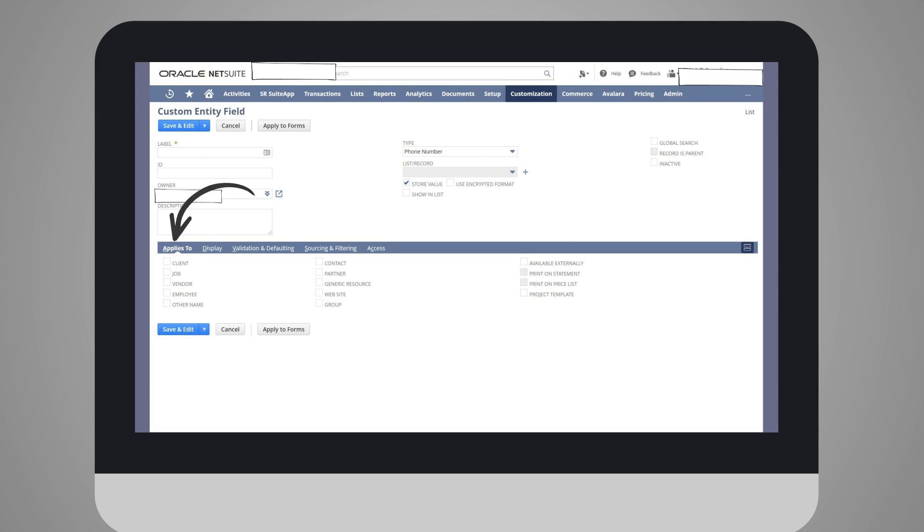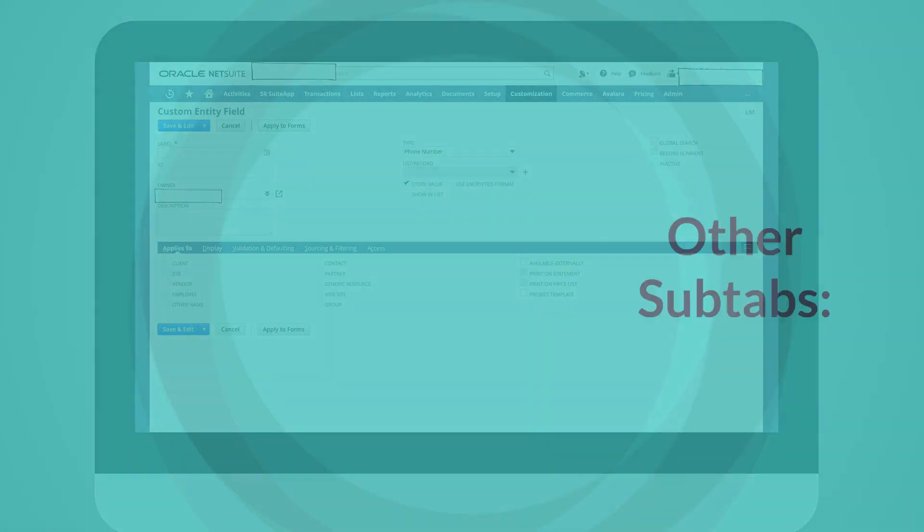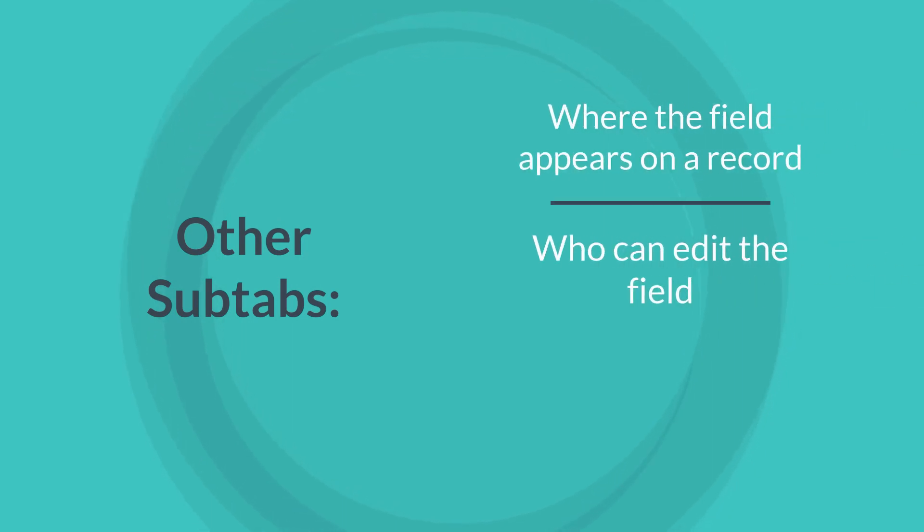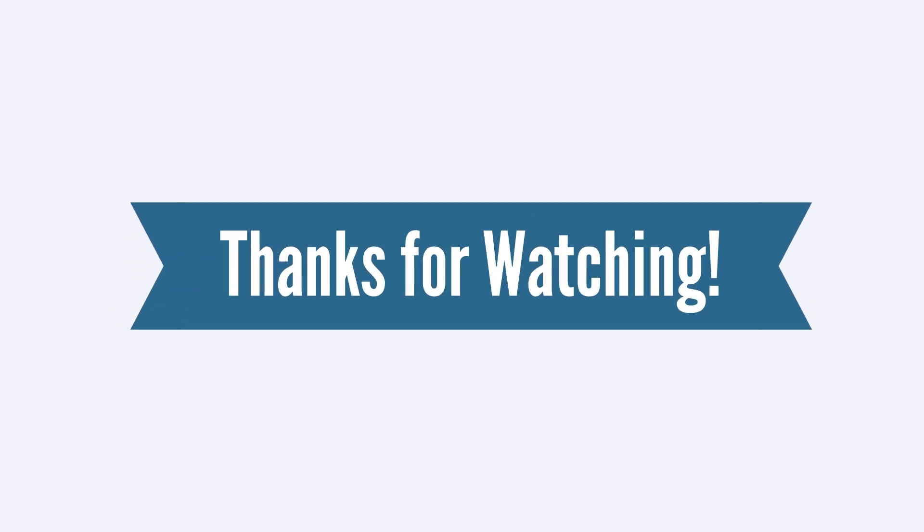The applies to subtab is perhaps the most important of the five, since this is where you would choose exactly which entities would include your custom field. The other subtabs enable you to do things like decide exactly where the field appears on a record, limit who can edit the field, and set the field to mandatory.